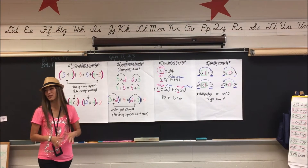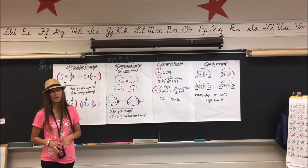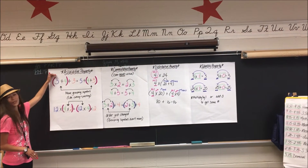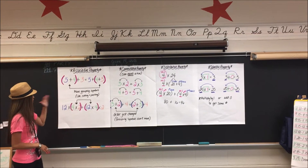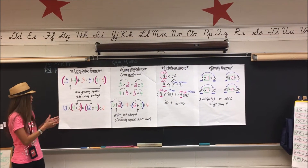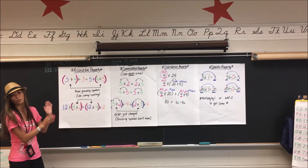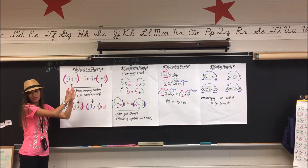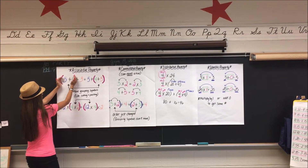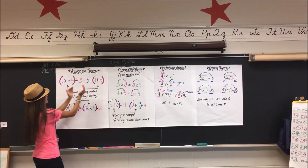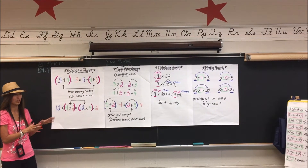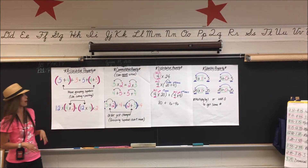Alright, so boys and girls, let's review the Properties of Operations. We have four main properties here. Our first one is the associative property. With associative, we are moving the grouping. Do we ever change the order of the numbers? No. So it's like taking your parentheses and cutting and pasting and moving them around to different sets of numbers. So, associative property.